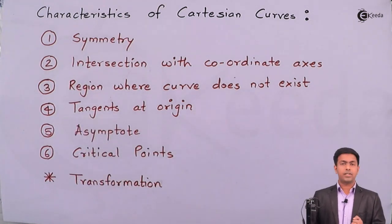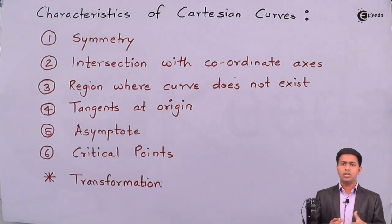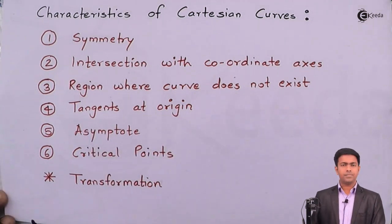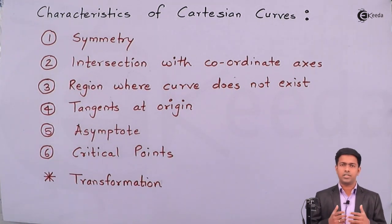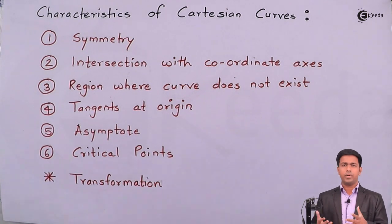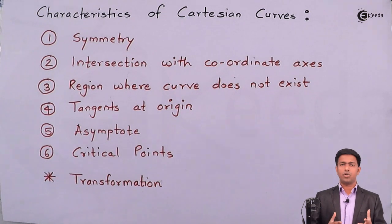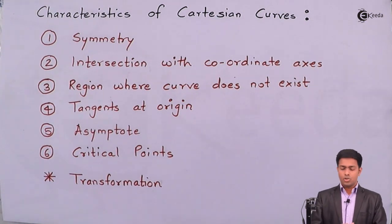The fourth characteristic is tangents at origin — whether the curve has any tangent at origin, and there can be multiple tangents. We also find the node, cusp, and isolated points for tangents at origin. The fifth is asymptotes — a straight line — and we will see three types: horizontal, vertical, and oblique. The sixth characteristic is critical points, where f'(x) is zero or does not exist.